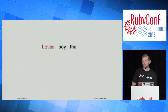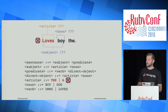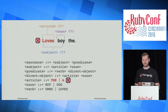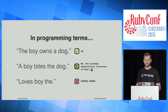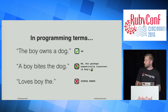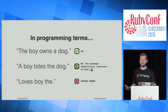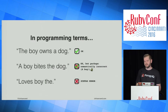'Loves boy the' doesn't work. If this is a sentence, it must begin with a subject, which must begin with an article, and an article must be 'the' or 'a' — it's a syntax error. In programming terms: 'the boy owns a dog' makes sense; 'a boy bites the dog' is technically correct but maybe not what we meant — that's a software bug. And 'loves boy the' has a syntax error. So what does this all have to do with Ruby? How does Ruby know the meaning of these characters — that this is a class definition named Person with two methods, initialize and say_hello?